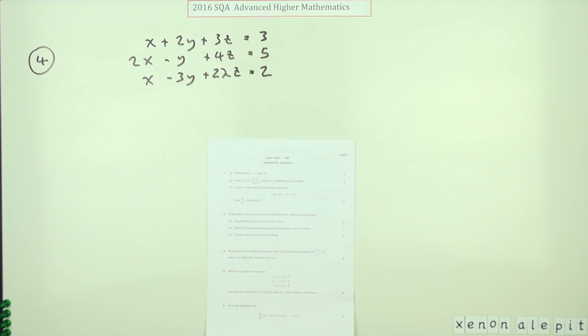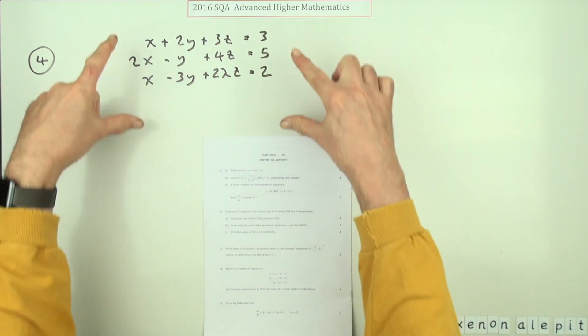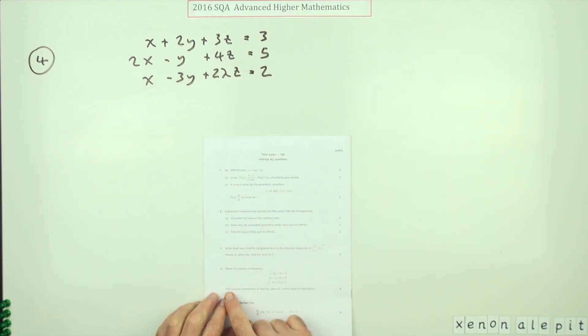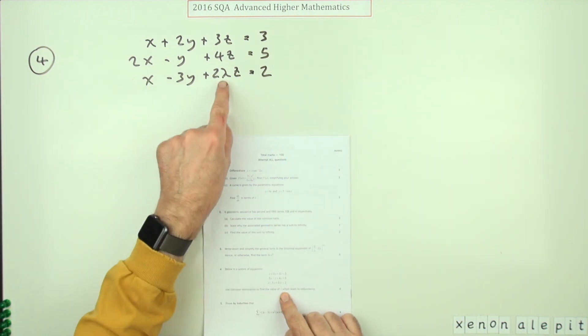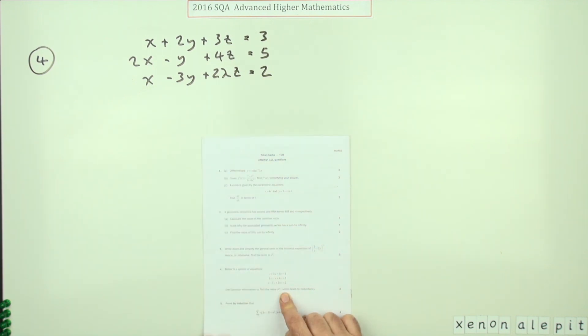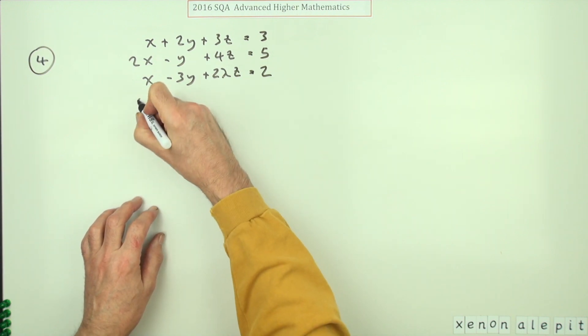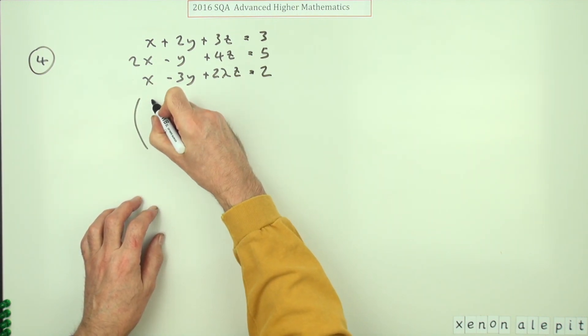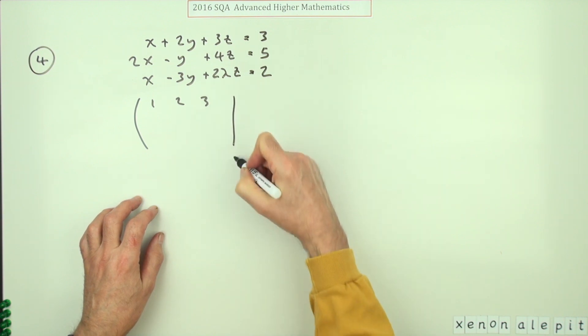Number four, from the 2016 Advanced Higher Math. Four marks, Gaussian elimination. You've got this system of equations here. Use Gaussian elimination to find the value of lambda—notice that Greek lambda sneaking in there—which leads to a redundancy. Step one: write it as an augmented matrix.